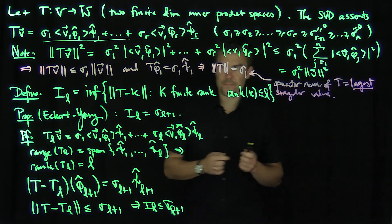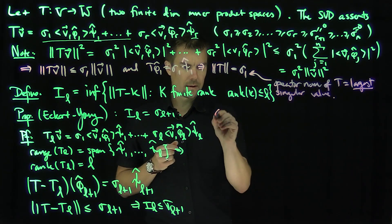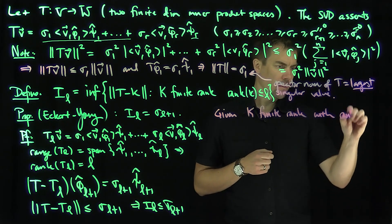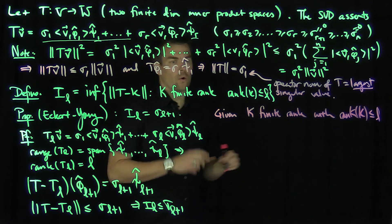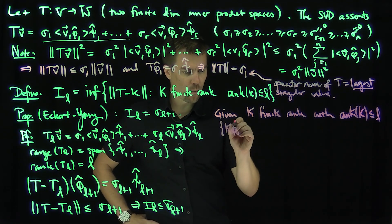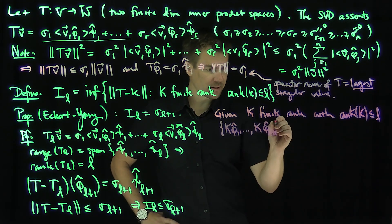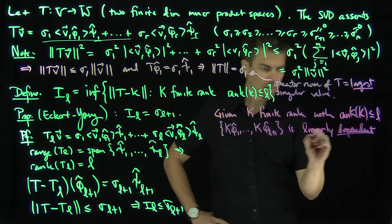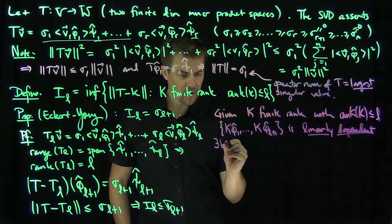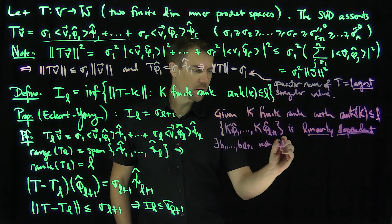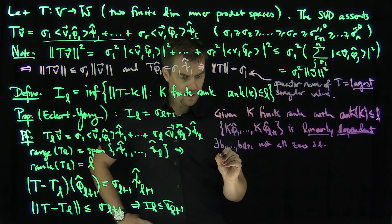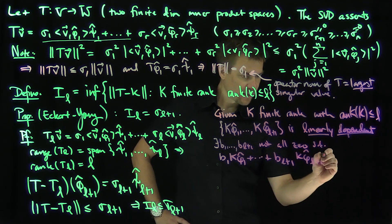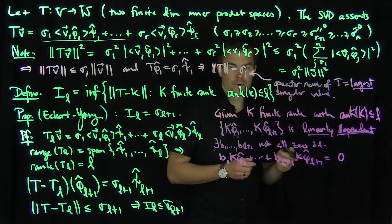Now we must prove the opposite inequality. Given an arbitrary K that is finite rank with rank of K less than or equal to L, the set {K(phi_1-hat), ..., K(phi_{L+1}-hat)} consists of L+1 vectors in the range of K, which has dimension at most L, so these vectors are linearly dependent. Therefore there exist coefficients B_1 through B_{L+1}, not all zero, such that B_1 K(phi_1-hat) + ... + B_{L+1} K(phi_{L+1}-hat) = 0.